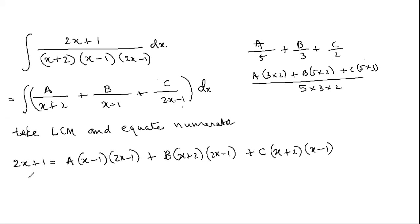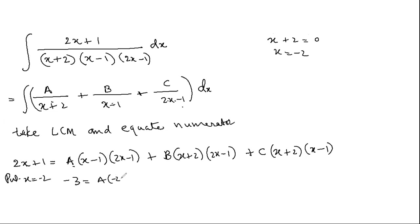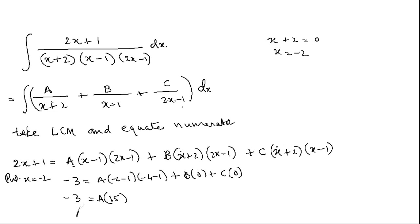To find A, the denominator of A is (x + 2). When will x + 2 = 0? When x = −2. Put x = −2: left side gives −4 + 1 = −3. A multiplies (−2 − 1)(−4 − 1) = (−3)(−5) = 15. B and C terms become 0. So A = −3/15 = −1/5.